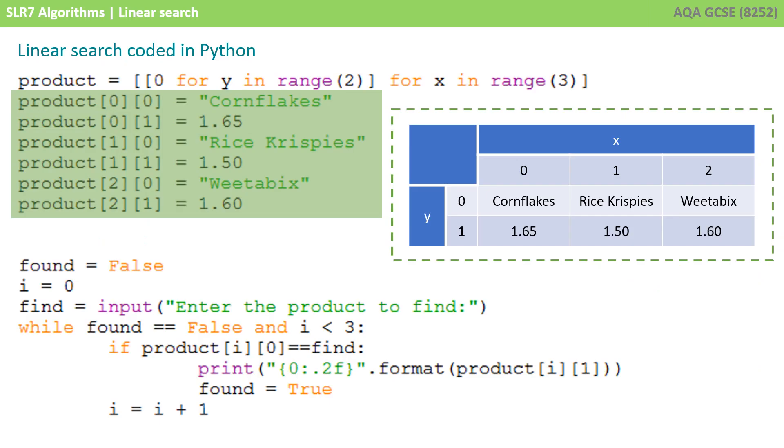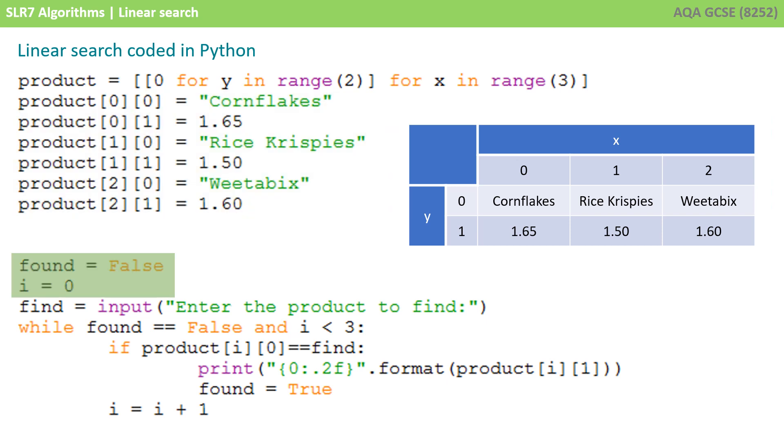So in Python code, the solution might look something like this. We're storing the data for our products in a two-dimensional list so that we can store the description and the price. We've then got a variable called found which we'll set to false initially and the index of the item to be 0.